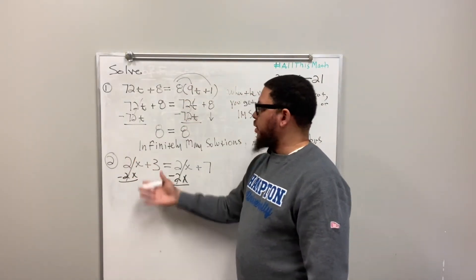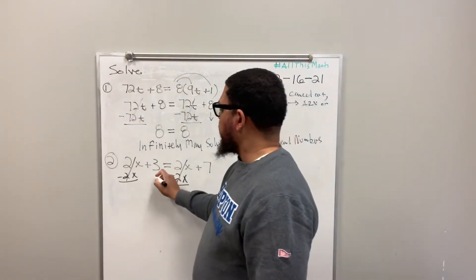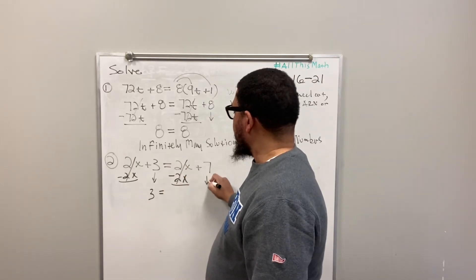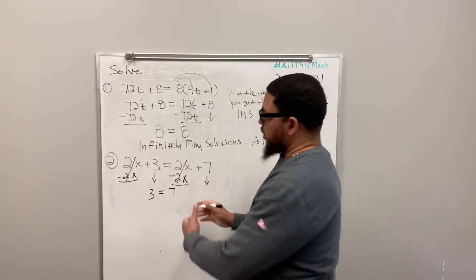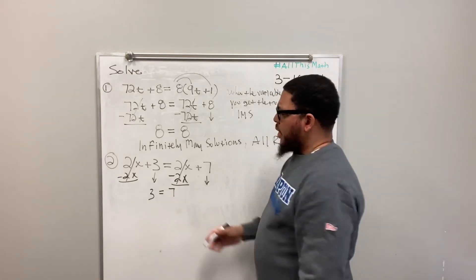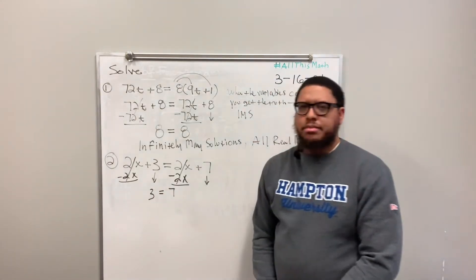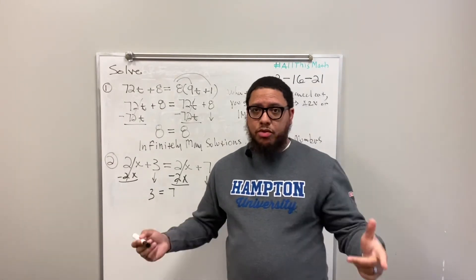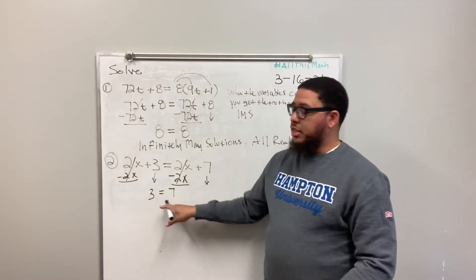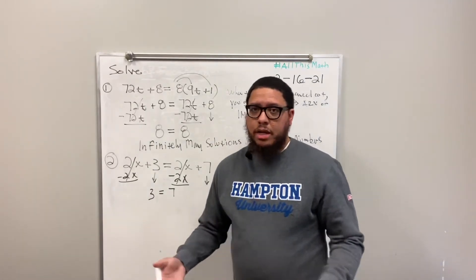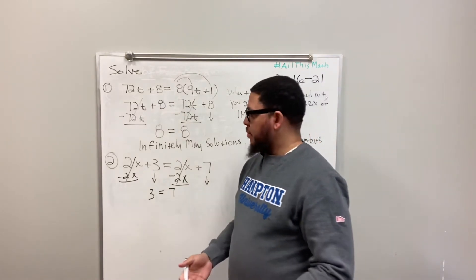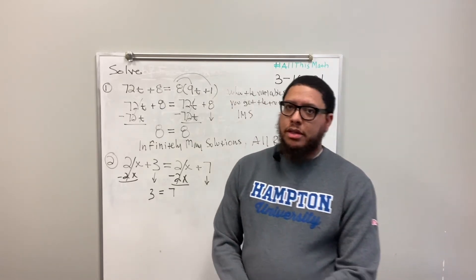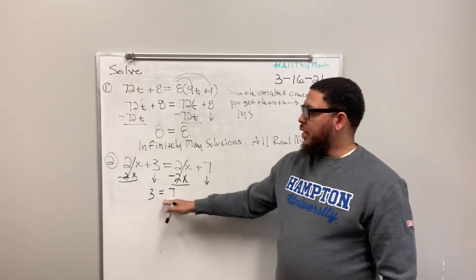A similar thing happened as in example 1. I bring the 3 down, the equal sign down, and the 7 down. Now I have a statement that says 3 equals 7. That's real suspect, because I know and you know that 3 doesn't equal 7. $3 and $7 are not the same thing — if somebody tried to tell you that, they're trying to scheme.